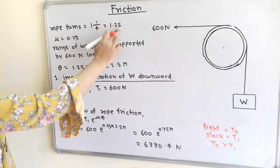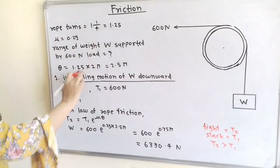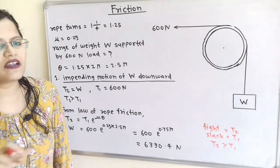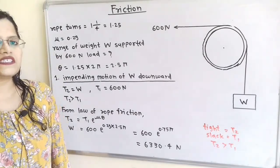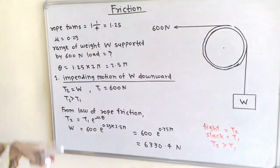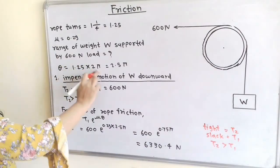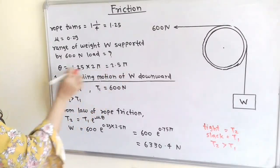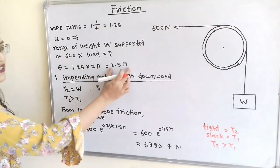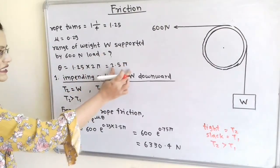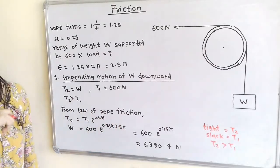The number of turns is given as 1.25. In one complete round, the total angle covered is 2π radians. So we multiply 1.25 by 2π, giving θ = 2.5π radians. This is the angle of contact in radians to be used in the formula.